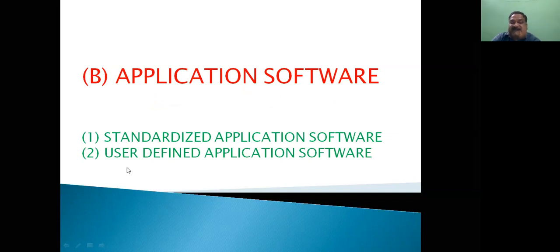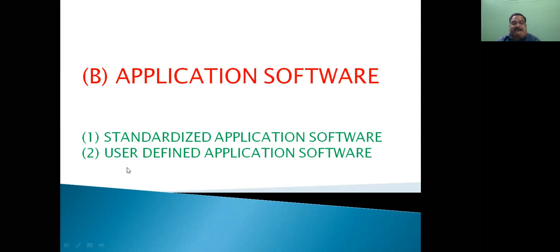The second type is user-defined application software — these are our own personal requirements. For example, if someone has a library they will maintain a book record; if someone has a medical store they will maintain a record of medicines; if someone has a school they will create school software; in a department, payroll software is made to maintain salary charts. User-defined application softwares are designed according to our own personal requirements.